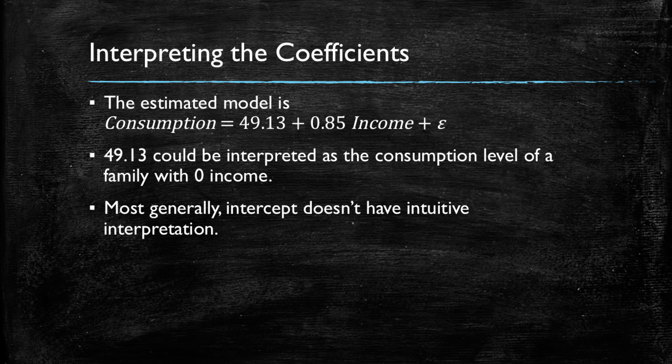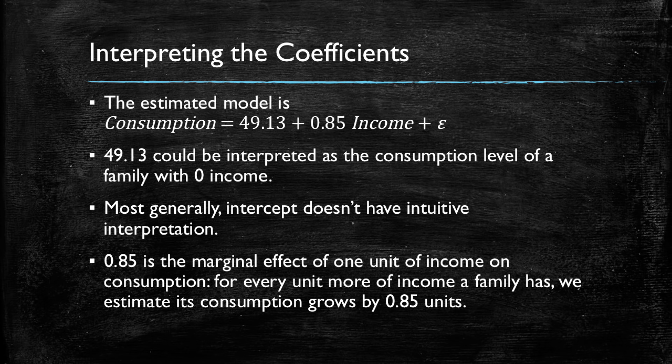Now, let's talk about the 0.85. This means that for every unit increase in income, consumption will grow by 0.85. We can call this the marginal effect, meaning that on the margin, consumption will grow 0.85 for every unit increase in income. And let's put some dollar numbers to this. Let's say a family's income is $100 more.